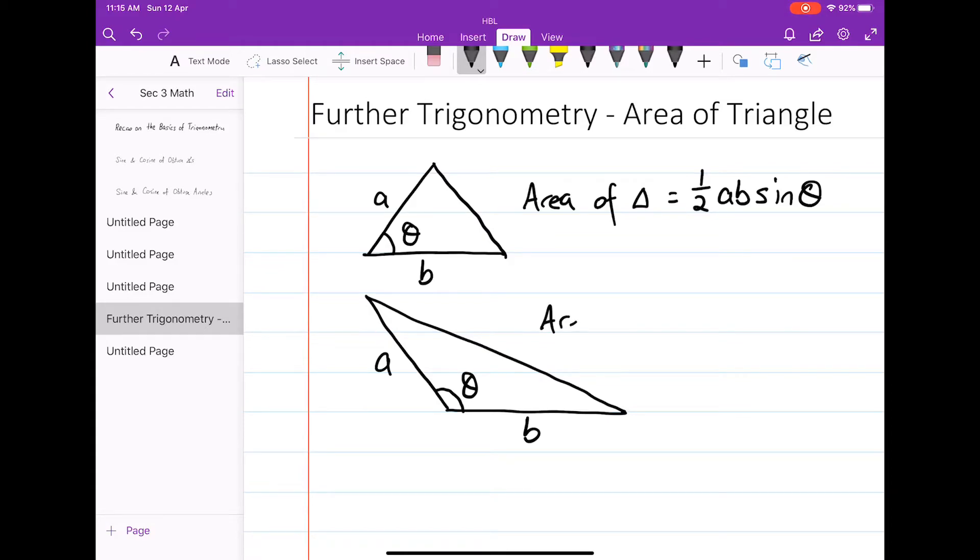Then again, the area of this triangle is also given by this formula: half times A times B times the sine of theta.